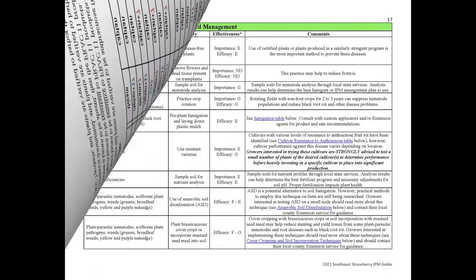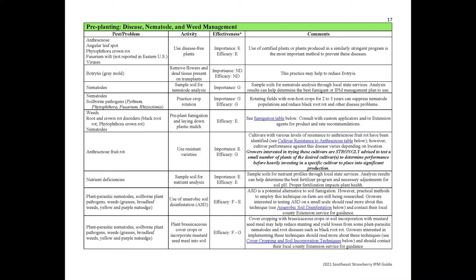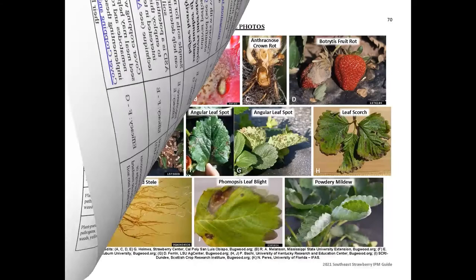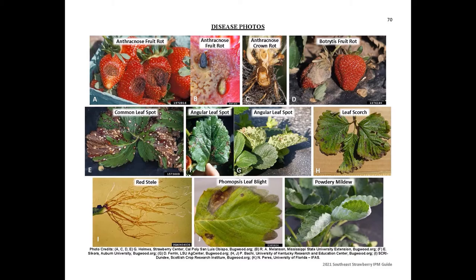The Strawberry IPM Guide also includes information to assist growers in making decisions for pre-planting activities. Expanded information is provided for nematode management, fumigants, and pre-plant dips, as well as other practices that are currently being researched. New additions for 2021 wrapping up the guide are photo pages that include color photos of some of the target diseases, insects, and weeds described in the guide.